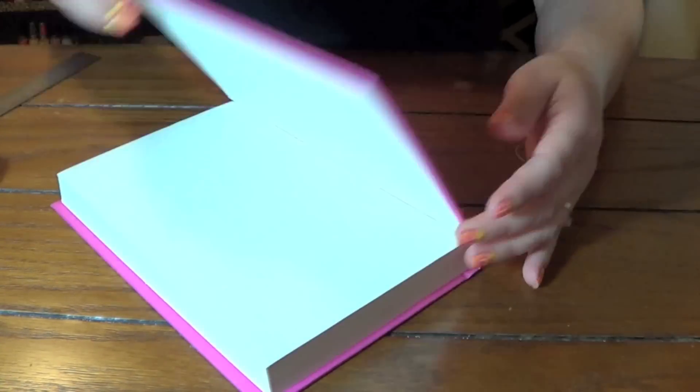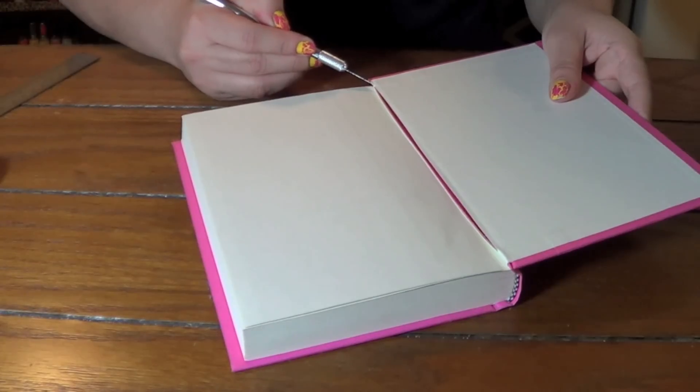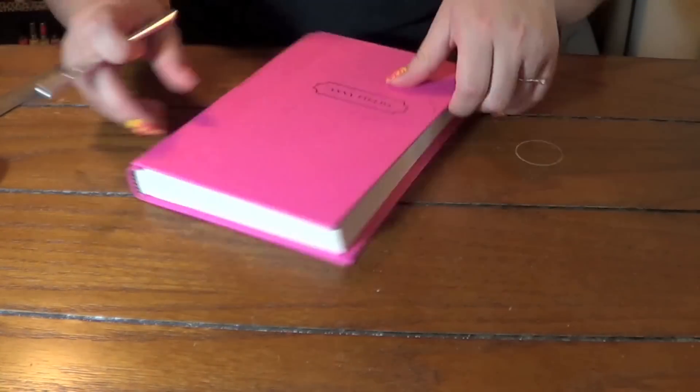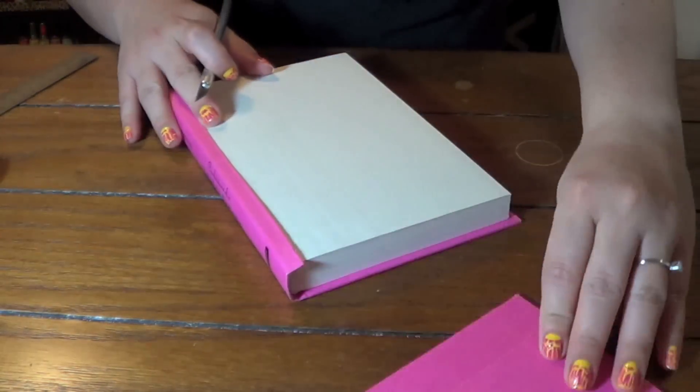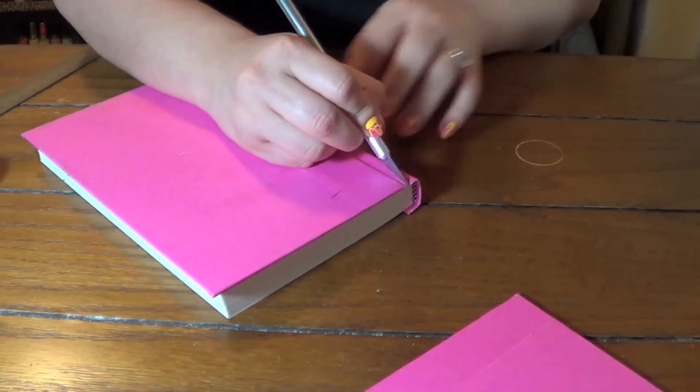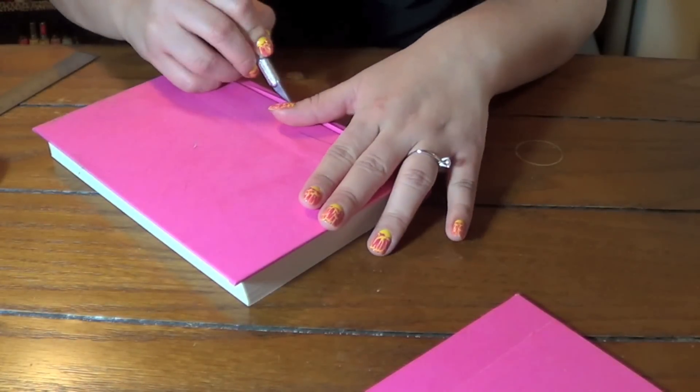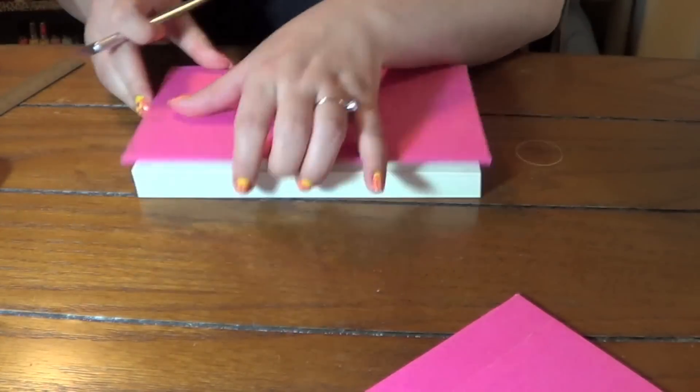So first you're gonna start off with taking off the flaps to the book. And I suggest the hardcover case book because I've tried with cardboard and cardboard didn't really work out so well, it was a little flimsy. So yeah, even a children's book will work if it's a hardcover case and you no longer want it, but just anything that's like a hardcover, that would work fine.